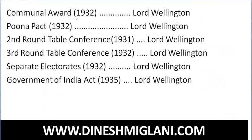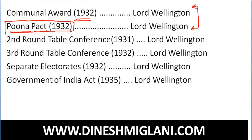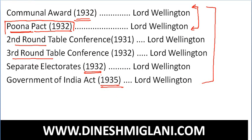After the failure of the Third Round Table Conference, the Communal Award was announced. At that time Lord Wellington was the Viceroy of India. The Communal Award provided separate electorates for Mohammedans and other communities. The Poona Pact was made between Gandhiji and Dr. B.R. Ambedkar. The Second Round Table Conference, Third Round Table Conference, separate electorates under the Communal Award, and the Government of India Act 1935 — all these were in the time period of Lord Wellington.